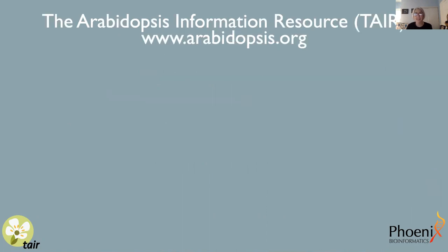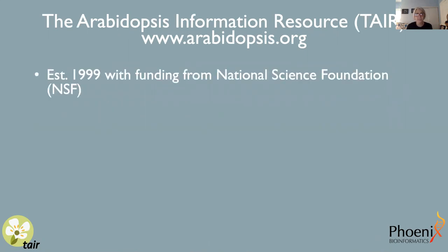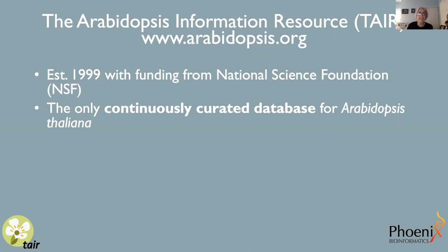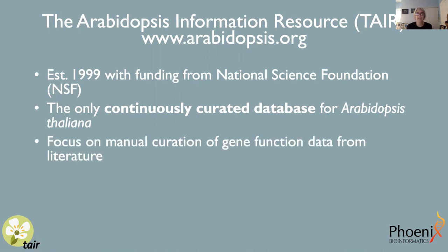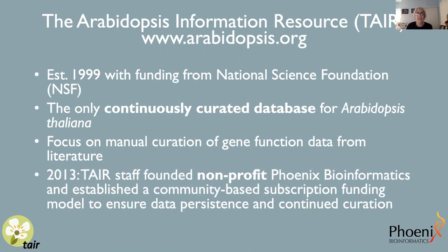TAIR at www.arabidopsis.org stands for the Arabidopsis Information Resource. It was established in 1999 with funding from the National Science Foundation. It is the only continuously curated database for Arabidopsis thaliana. Our focus at TAIR is on the manual curation of gene function data from the literature. In 2013, TAIR staff founded the nonprofit Phoenix Bioinformatics and established a community-based subscription funding model to ensure the data could persist and curation could continue past the time that NSF funding ended.